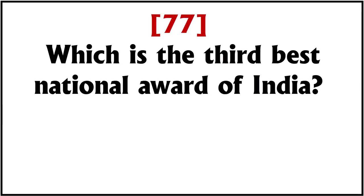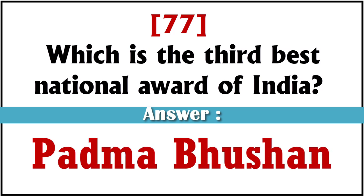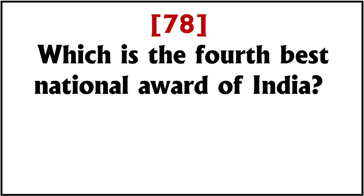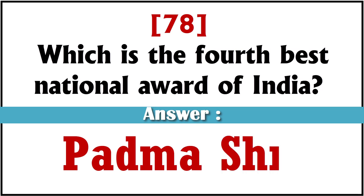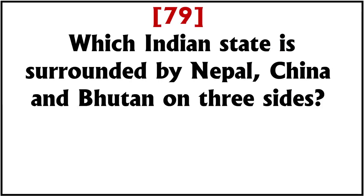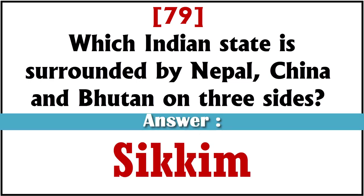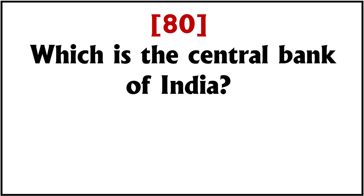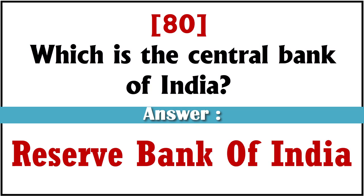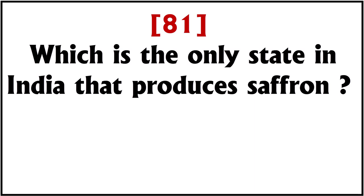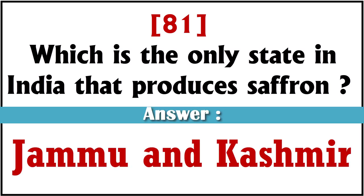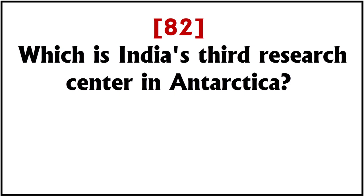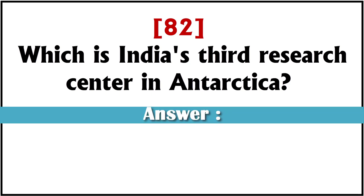Which is the third best national award of India? Padma Bhushan. Which is the fourth best national award of India? Padma Shri. Which Indian state is surrounded by Nepal, China and Bhutan on three sides? Sikkim. Which is the central bank of India? Reserve Bank of India. Which is the only state in India that produces saffron? Jammu and Kashmir. Which is India's third research centre in Antarctica? Bharati.